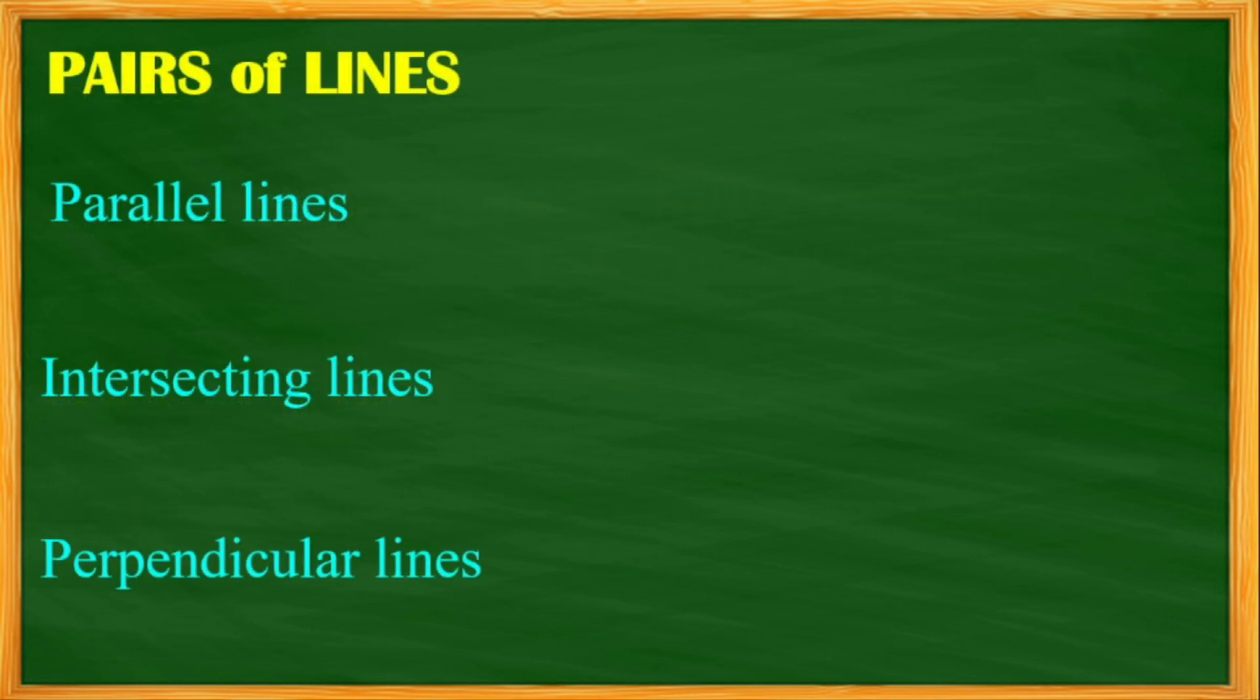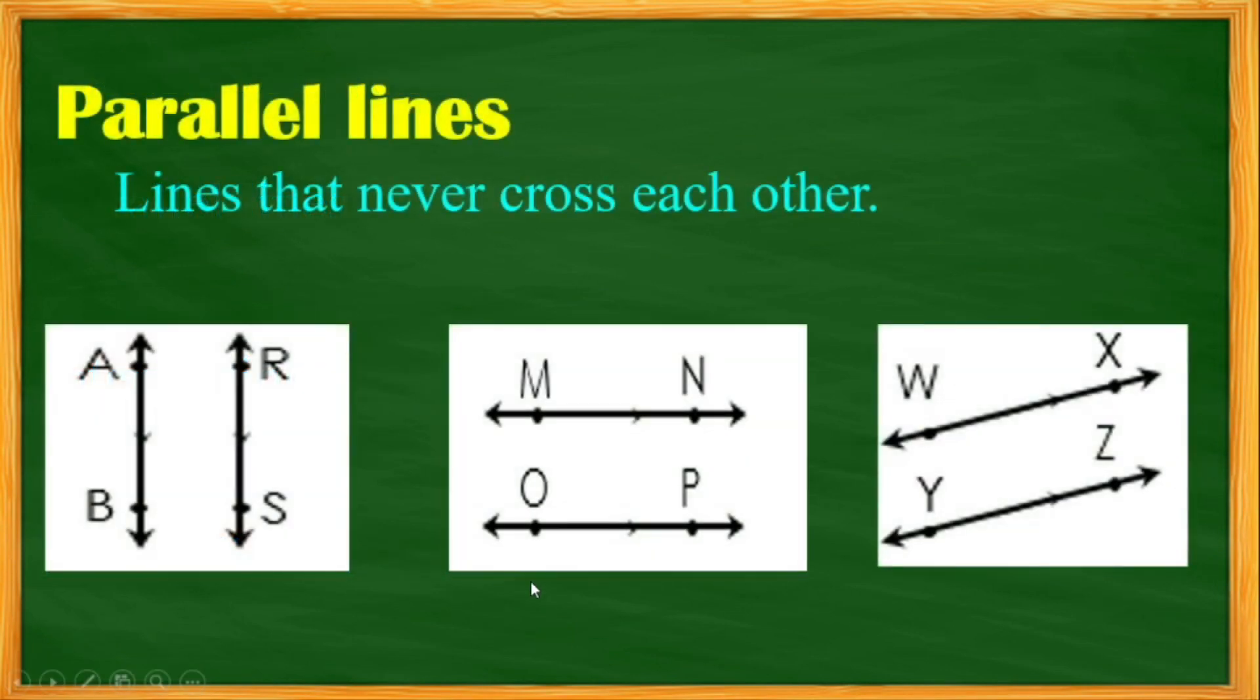In a pair of lines, we have three different pairs of lines. We have parallel, intersecting lines, and perpendicular lines. In parallel lines, lines that never cross each other. This would be an example of parallel lines.